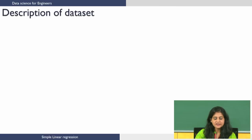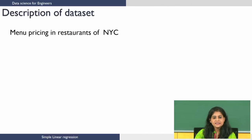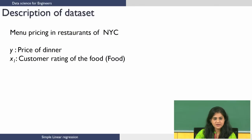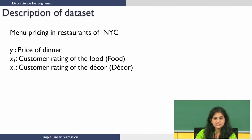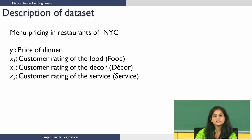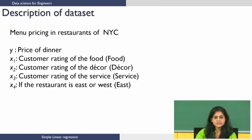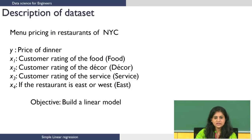Let us look at the description of the dataset. The data is about menu pricing in restaurants of New York City. Y, which is my dependent variable, is the price of the dinner. There are 4 other independent variables: food — the customer rating of the food; decor — the customer rating of decor; service — the customer rating of the service; and east — whether the restaurant is located on the east or west side of the city. Our objective is to build a linear model with Y (price) and all 4 independent variables.